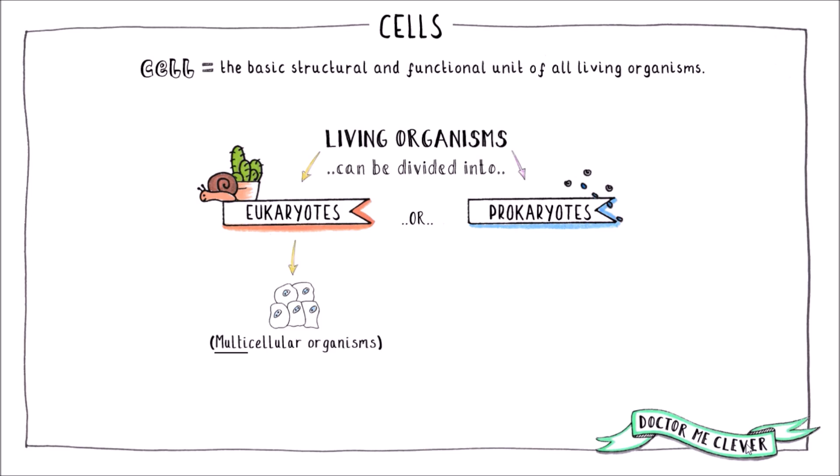Eukaryotes are made up of more than one cell. They are said to be multicellular organisms. And prokaryotes are made up of a single cell. They are said to be unicellular organisms.